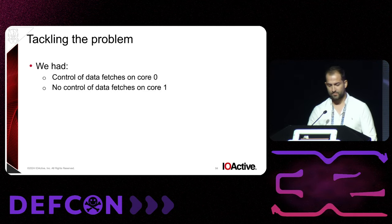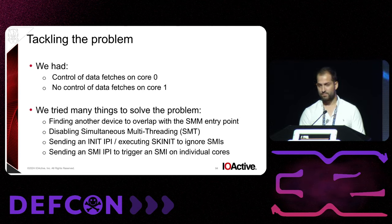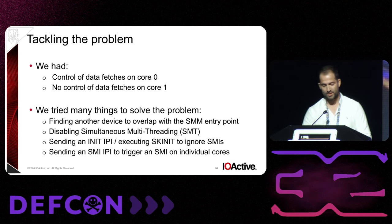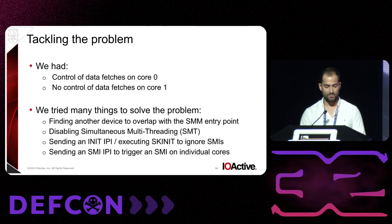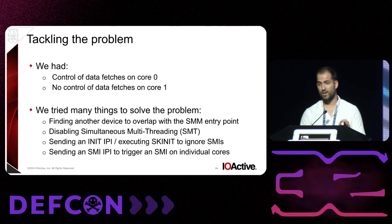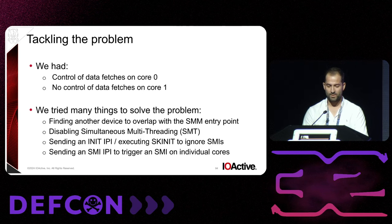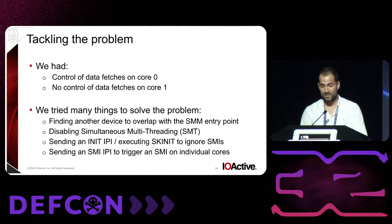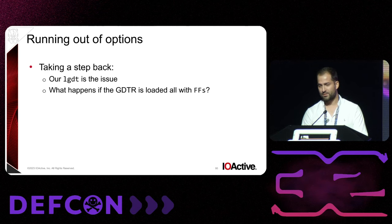To tackle the problem, we had to get control of core one. We tried to find another device to overlap with the entry point of core one — there was none. We tried to disable SMT in the BIOS — that also didn't work. We tried to use the INIT IPI and also the SKN instruction to put core one into a state that would make it ignore SMIs — that also didn't work. And finally, we tried to send an SMI IPI, which according to documentation would allow us to trigger SMI on individual cores — it also didn't work. Despite the documentation indicating one thing, in practice we didn't manage to get it to work.